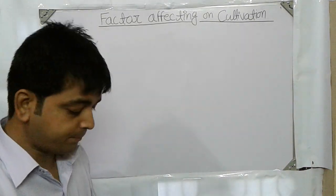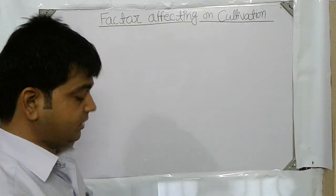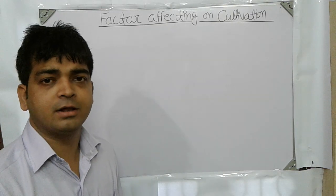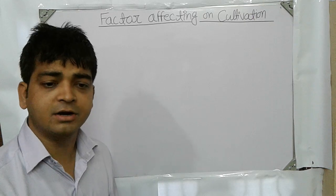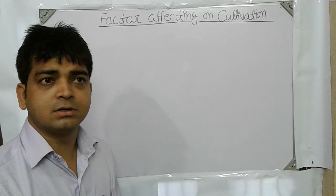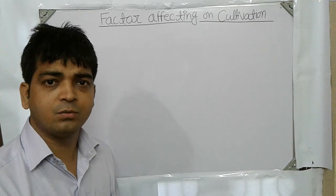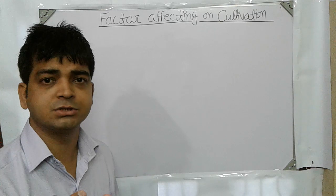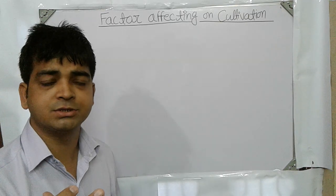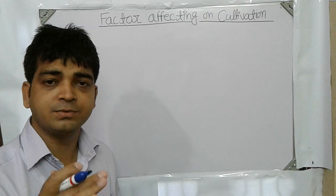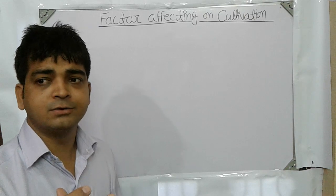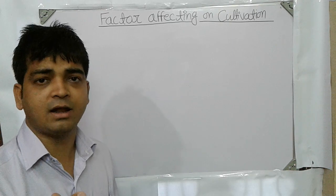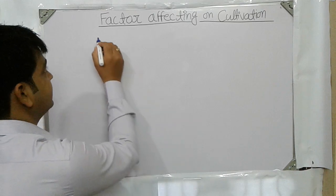Factors affecting the cultivation of medicinal plants. When we are cultivating a medicinal plant, there are many factors which can affect the cultivation. We need to ensure the nature and quality of the chemical constituents in the crude drugs which we are going to get from the cultivated medicinal plant. So we need to take care of many factors.